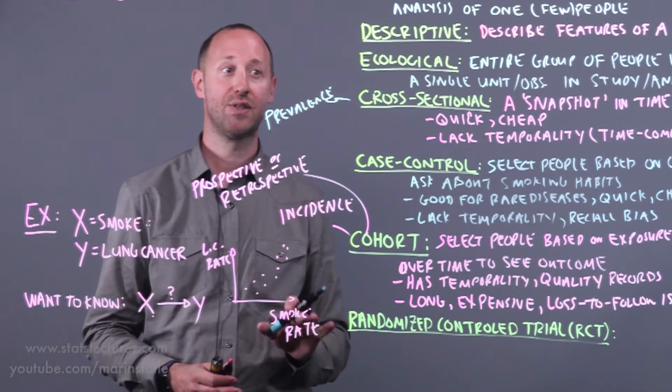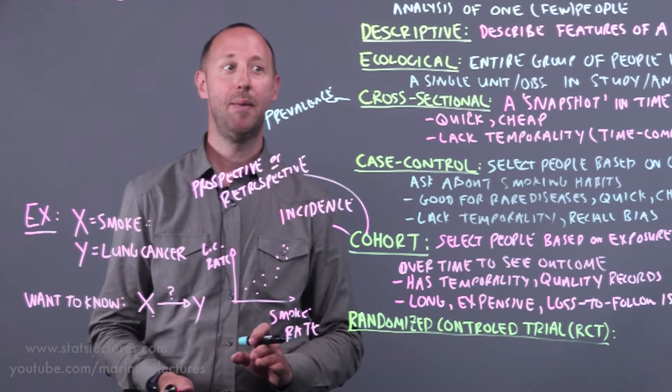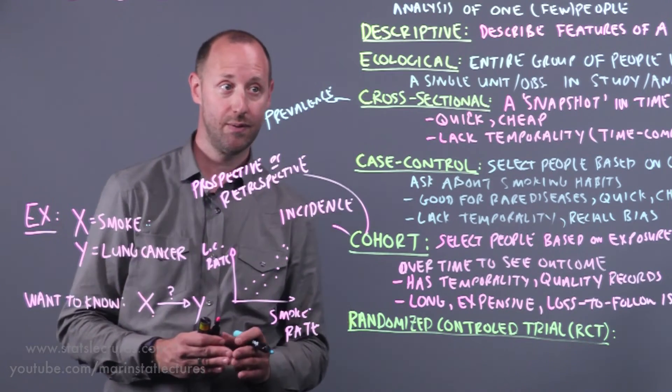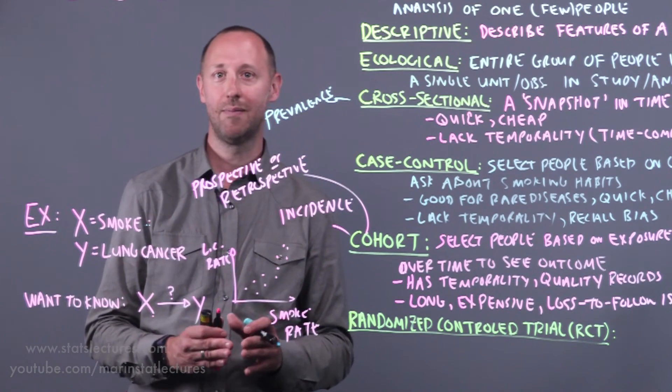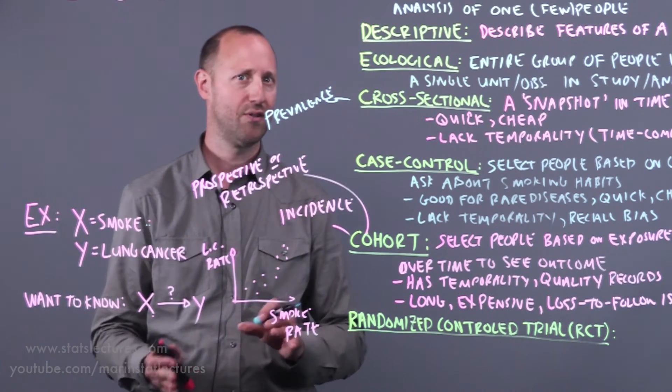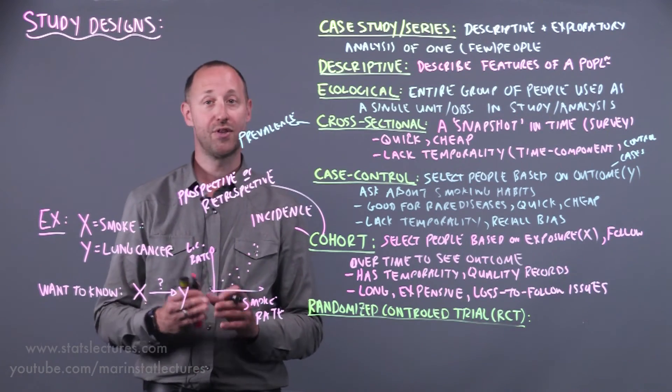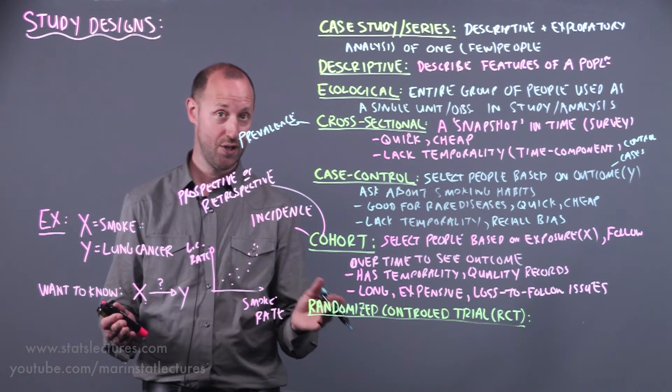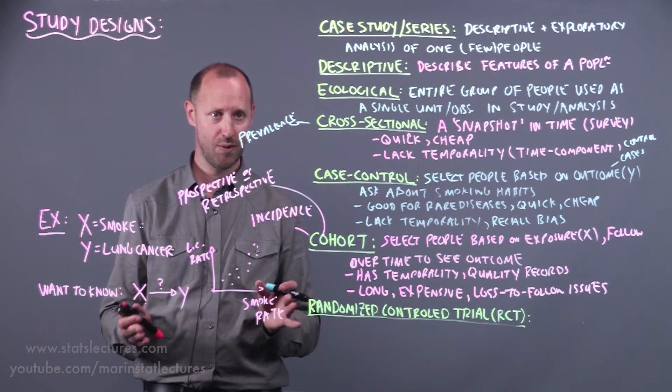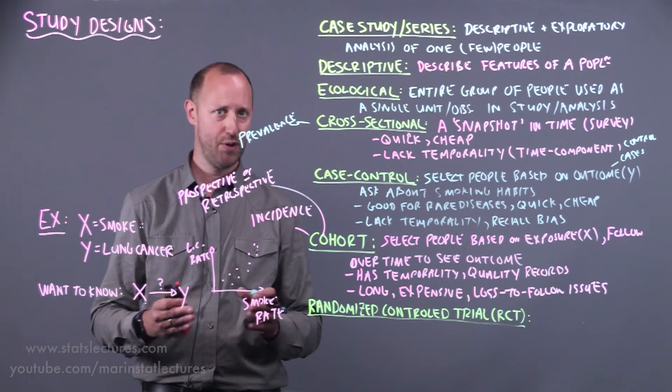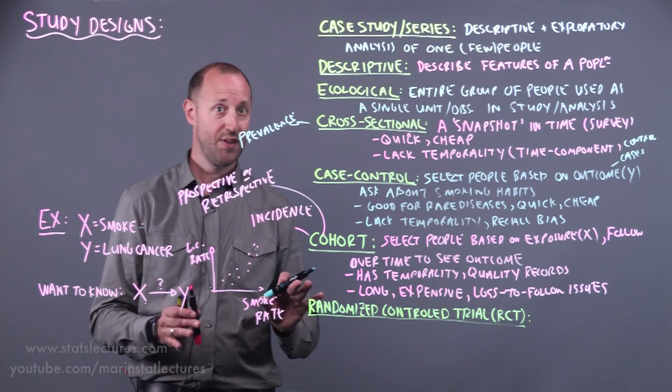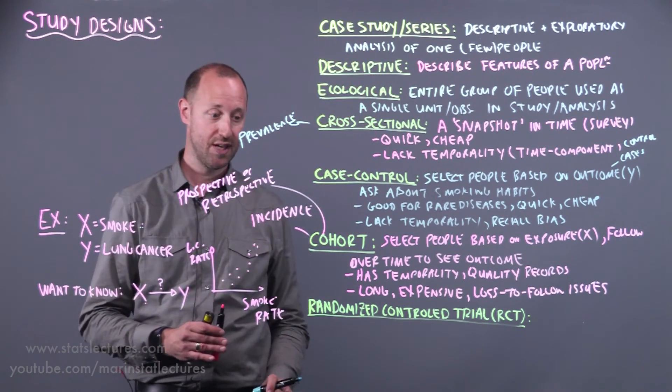Now one of the big challenges with observational studies is that people self-select. In this example, people choose if they smoke or if they don't smoke. And by doing that, that means that the smokers and the non-smokers differ in other ways. This is what we're going to start to call confounding later on. For example, the smokers might be older on average than non-smokers. The smokers may be working different occupations than the non-smokers, or different distribution of occupations. They may have different lifestyle habits and so on. These are one thing that we really need to deal with in all these observational designs.